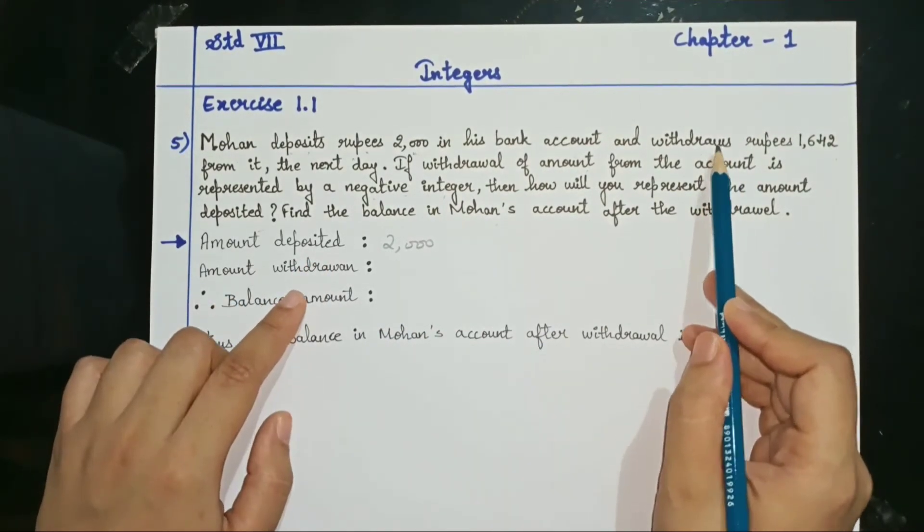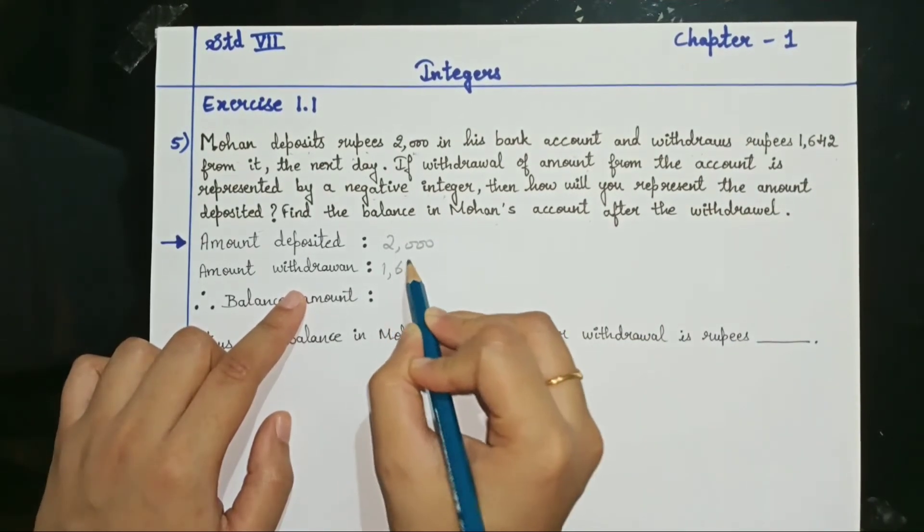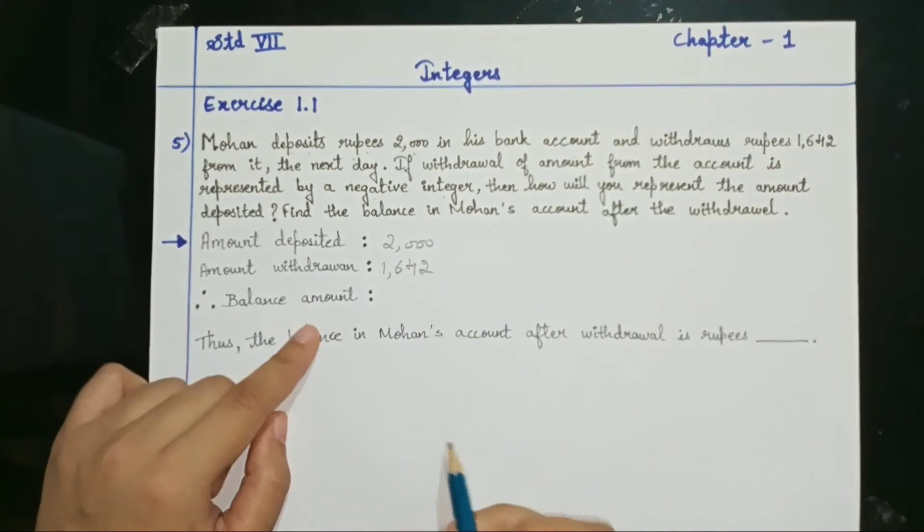Then, amount withdrawn. How much amount he withdraws? 1642.